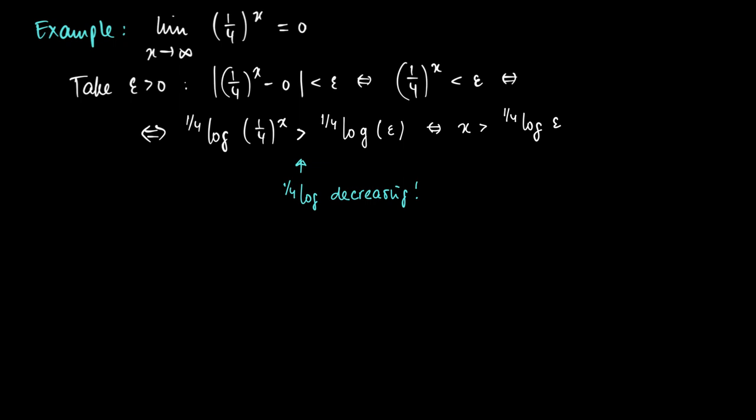So now we have something equivalent. The equivalent states that this holds true for x is larger than (1/4)log(epsilon). So we may take in this definition N_epsilon equal to (1/4)log(epsilon), and then we automatically have that when x is larger than this number, the difference of (1/4)^x and 0 is smaller than epsilon.